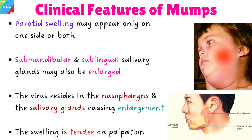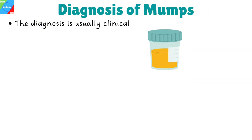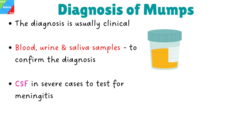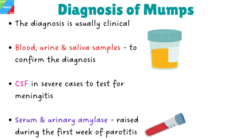The diagnosis of mumps is usually clinical, except in cases where the parotid glands are not swollen. A physical examination of the facial swelling is required. Blood, urine, and saliva samples are taken to confirm the diagnosis. In severe cases, cerebrospinal fluid is tested to check for infection of the brain. Serum and urinary amylase are raised during the first week of parotitis.